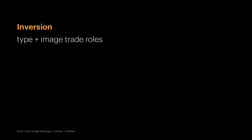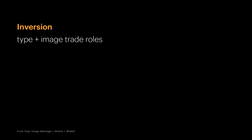The final one is inversion. This is where type and image trade roles — the type becomes the image. Examples include hand-drawn letter forms. The poster on the right is actually a project I do with sophomores in typography where they have to pick a line from a song and make the letter forms. It's where the type is starting to do the work for you as opposed to the photographs or imagery back behind it.